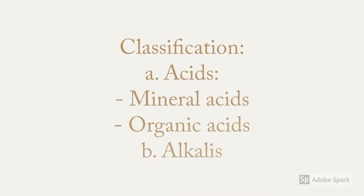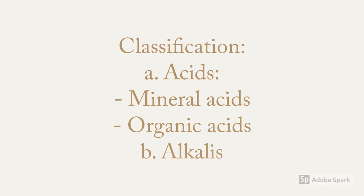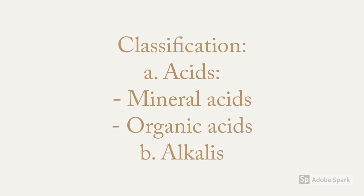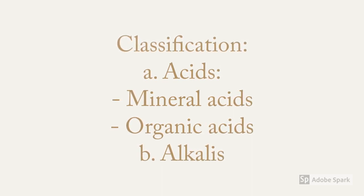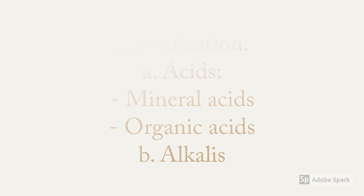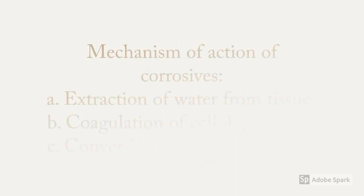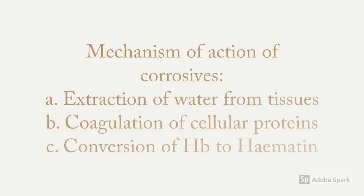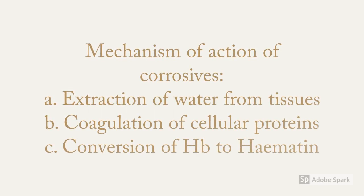Corrosive poisons may be classified into acids and alkalis. The acids include mineral acids such as sulfuric acid, hydrochloric acid, or nitric acid, whereas organic acids include oxalic acid, acetic acid, or formic acid. The alkalis include sodium hydroxide, potassium hydroxide, ammonium hydroxide, and many more.